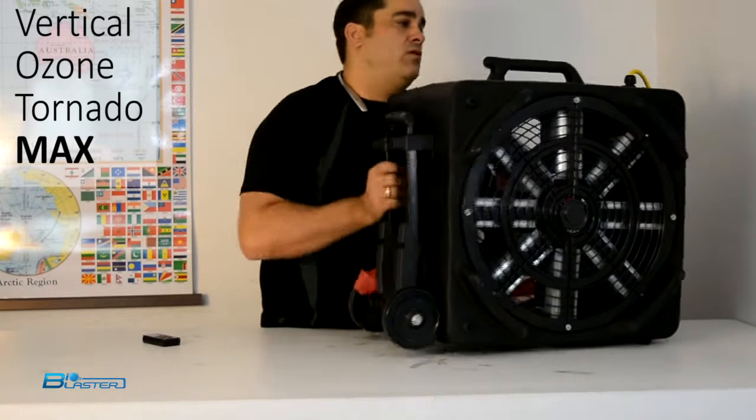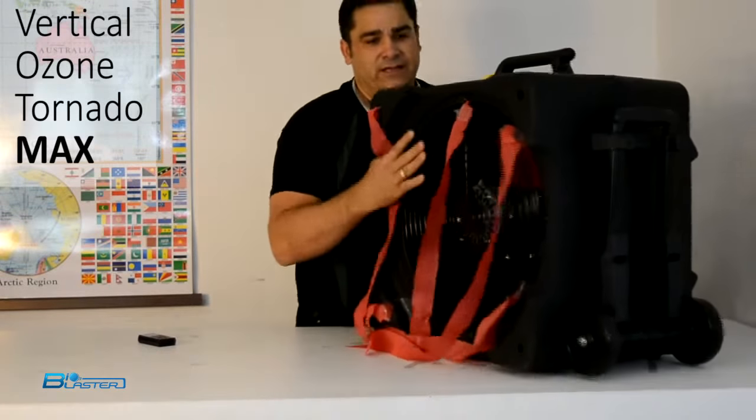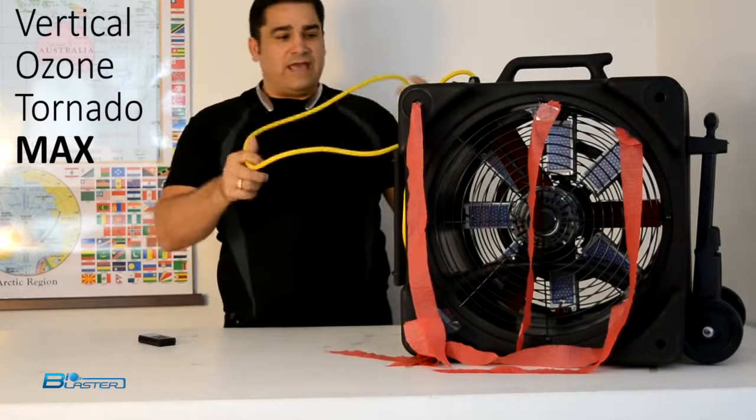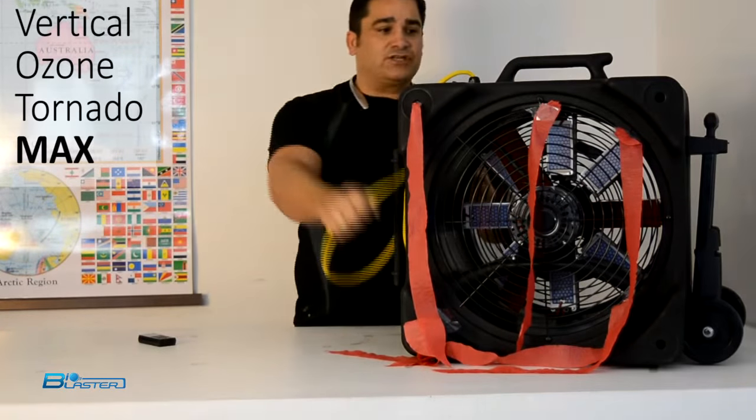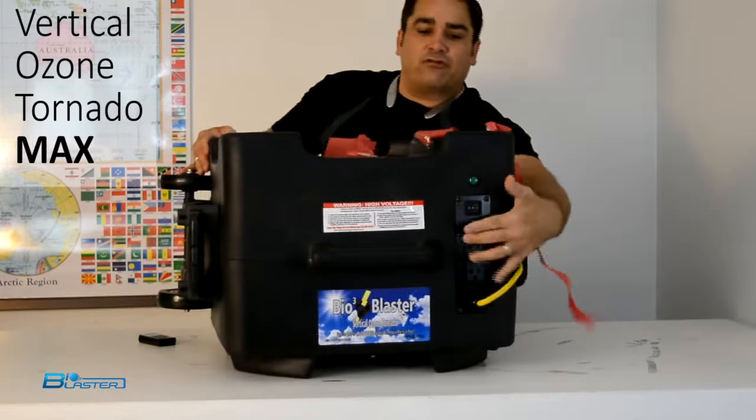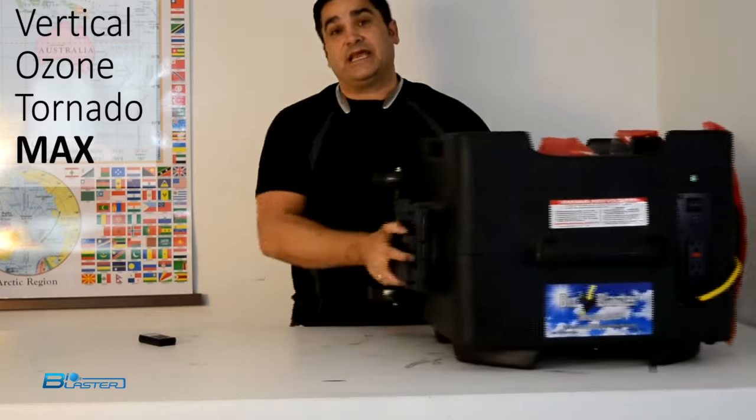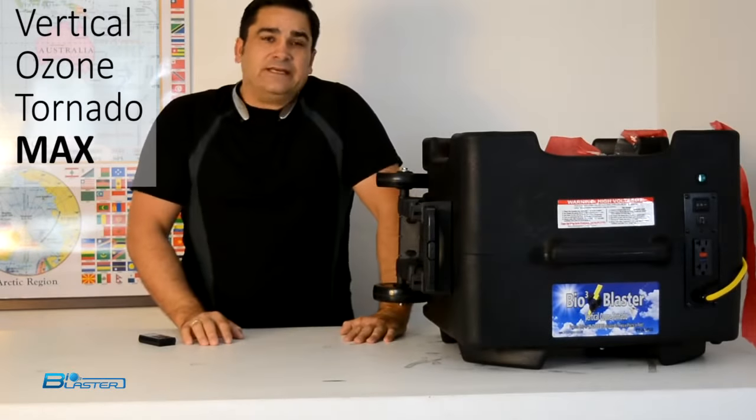This machine being able to be used both horizontally and vertically comes with a very heavy 20 foot, heavy duty 12 gauge cord. It also comes with a ground fault interrupt circuit so that this machine can be daisy chained together with other machines.